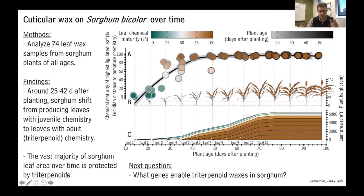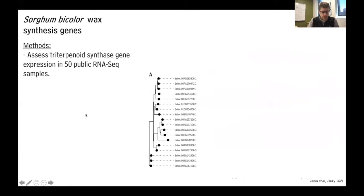Because we're interested in comparisons between maize and sorghum, we wanted to move away from the phenotypic level and look at the genotypic level. We wanted to know what genes are enabling these triterpenoid waxes in sorghum — which are present for the majority of the plant's lifespan — but are not present in maize. We used oxidosqualene cyclase sequences from other plants as queries to blast the sorghum genome, and found 24 oxidosqualene cyclase sequences in the sorghum genome.